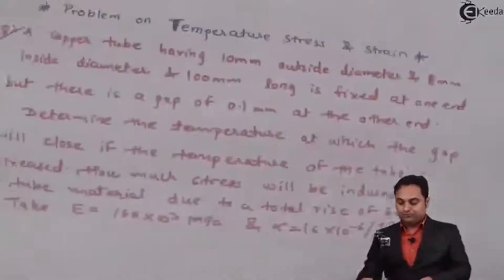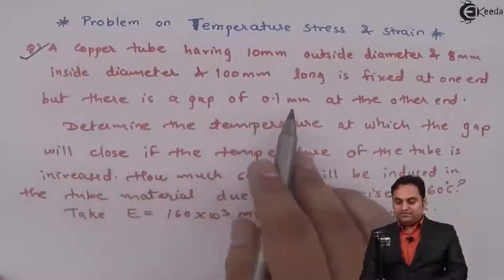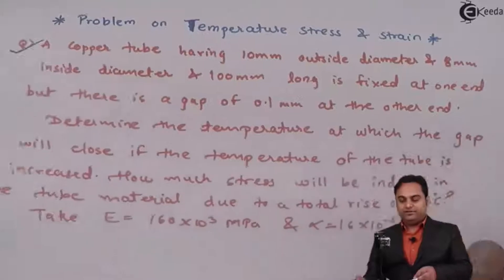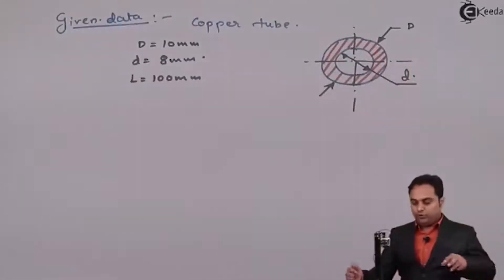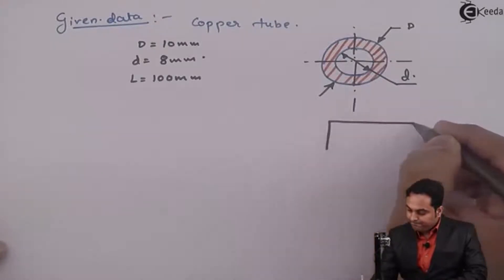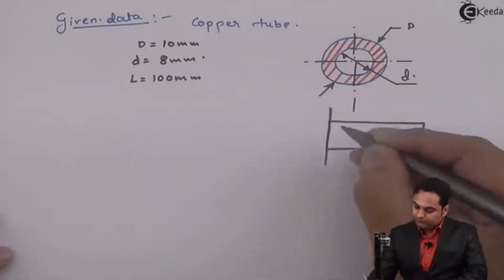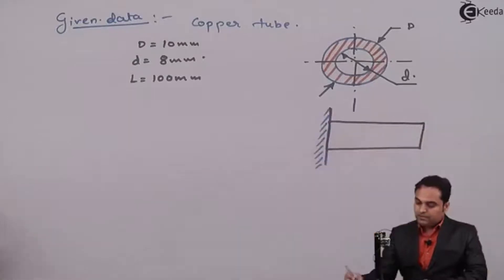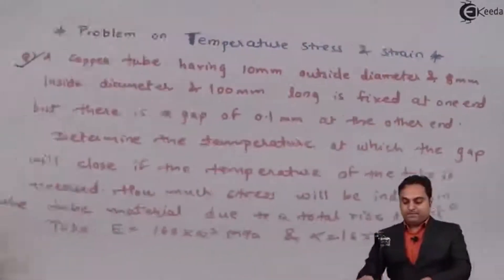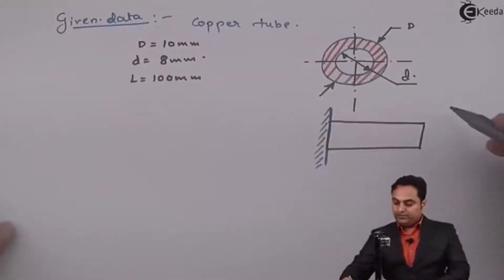It is fixed at one end but there is a gap of 0.1 mm at the other end. So this hollow tube is being taken and it is attached in such a way that it is being fixed at one end and there is a gap of 0.1 mm at the other end.